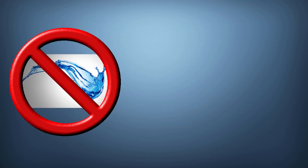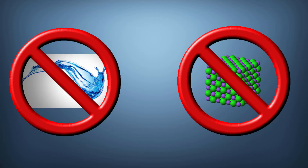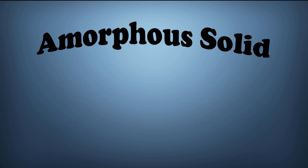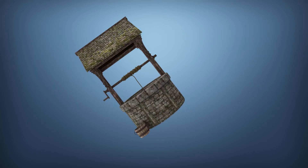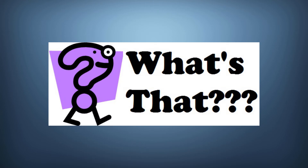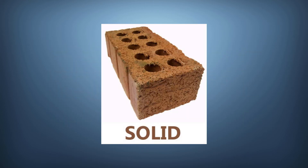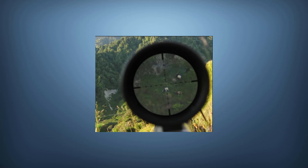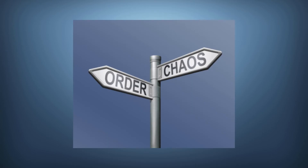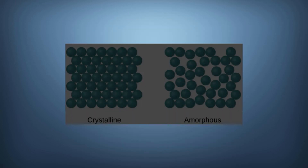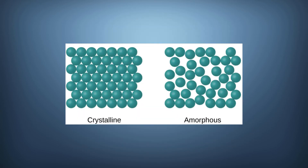So what exactly is glass? Well, like I said, it's not a liquid and it's not exactly a solid either. In fact, it's what we call an amorphous solid. An amorphous solid is a solid lacking long-range order like that of a crystal.